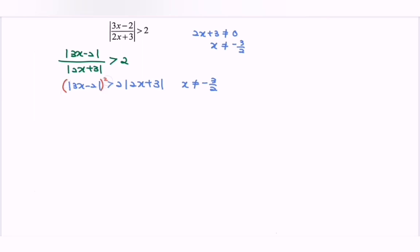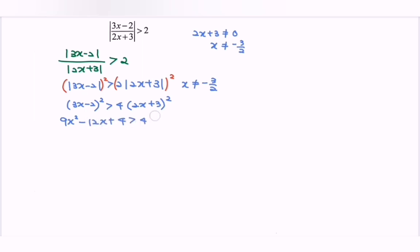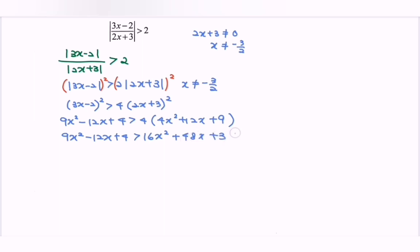The second step is to square both sides. If we square both sides, we have: (3x minus 2) squared, greater than 4 times (2x plus 3) squared. Expanding: 9x squared minus 12x plus 4, greater than 4 times (4x squared plus 12x plus 9). So we get 9x squared minus 12x plus 4, greater than 16x squared plus 48x plus 36.